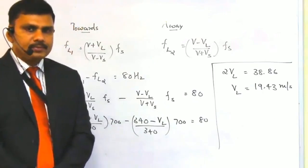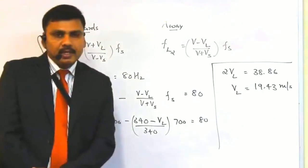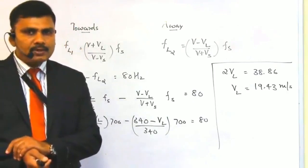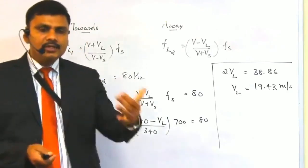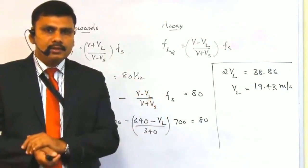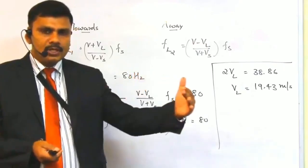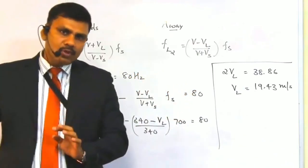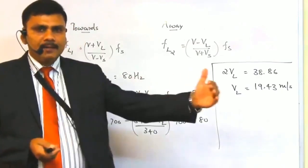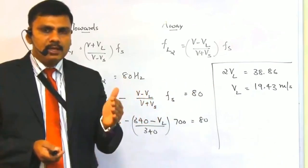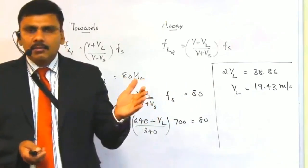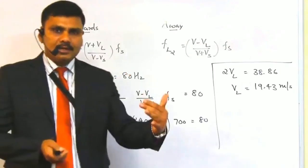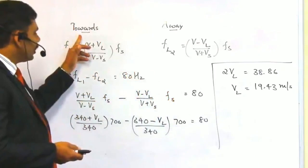The second question asks for the speed of the car. Here the source of sound is the ambulance, producing a constant frequency of 700 Hz, and the listener is in the car. The car moves at a constant speed towards the ambulance and then moves away from it. There are two cases to consider.